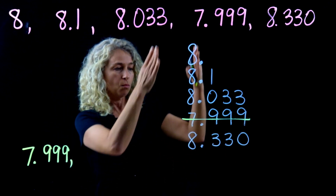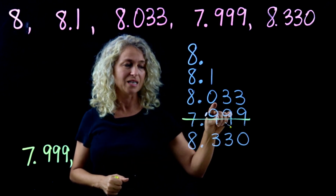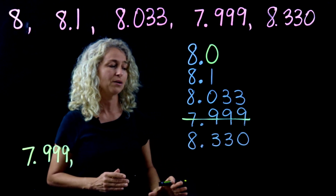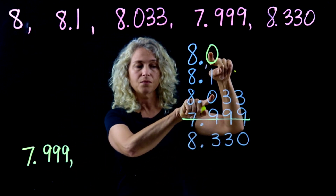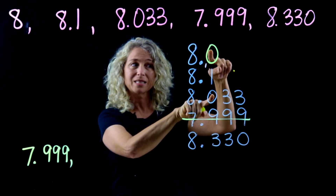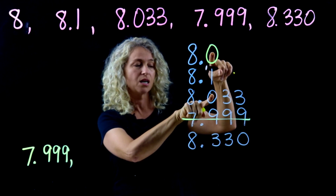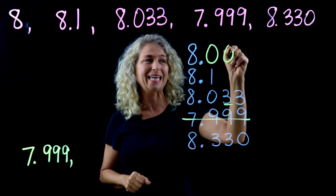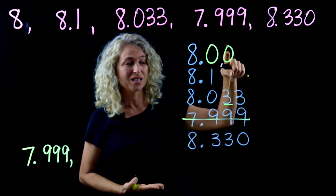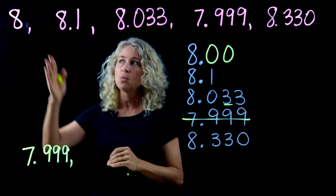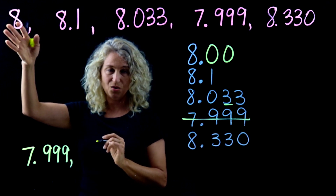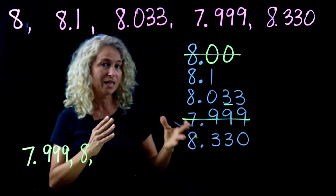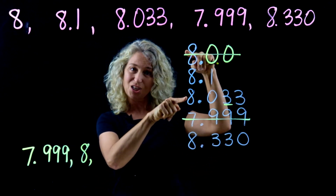Now let's look for the next least number. Move over to the tenths place — we're comparing three, zero, one, and nothing, which means zero. Fill in the hole so you can compare. We see that zero is the least in the tenths place. Move over to the hundredths place and compare three versus nothing, which is zero. So the whole number eight goes next — written just as eight, crossed off.